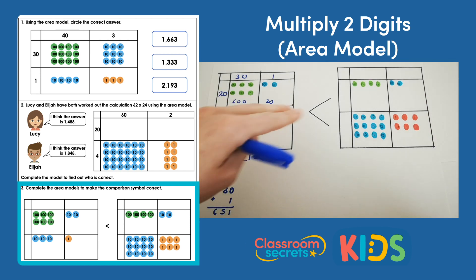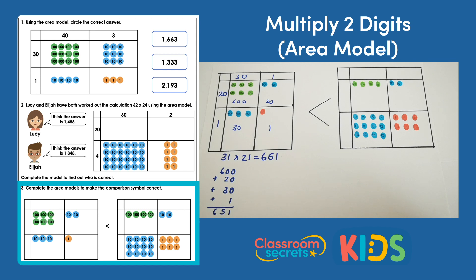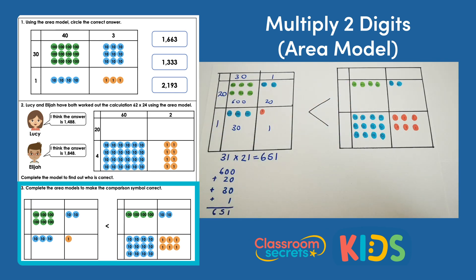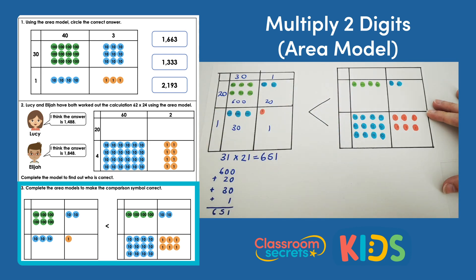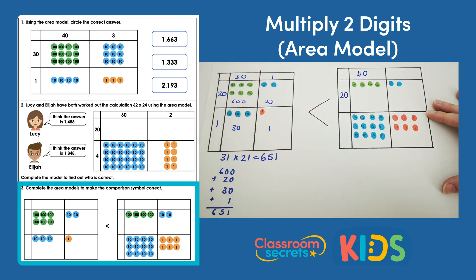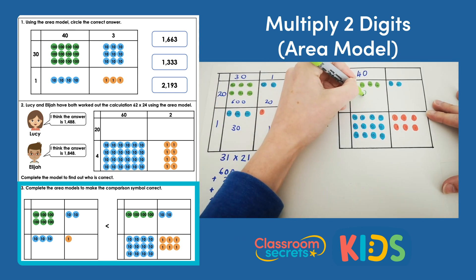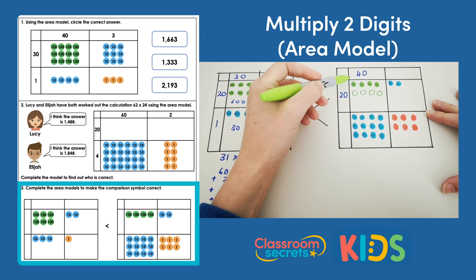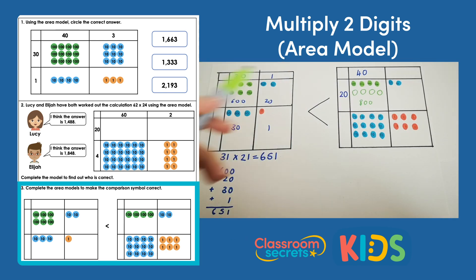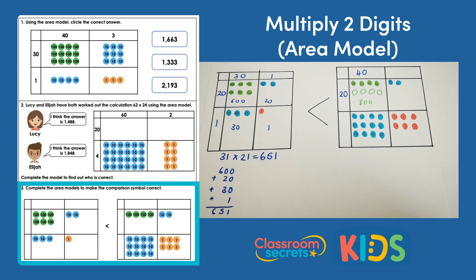So I know now that whatever I put in this area model on the right, the total needs to be greater than 651 to make the comparison statement true. First of all I need more hundreds, so instead of just 4 hundreds, I'm going to use 40 times 20, which gives me a total of 800. That's definitely bigger, but I want to make it even bigger — I'm going to add even more.